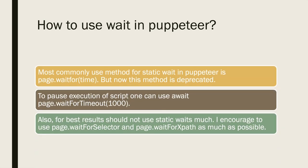How to use waits in Puppeteer: the most commonly used method for a static wait was page.waitForTimeout(), but this method is now deprecated — mentioning that shows the interviewer you use Puppeteer regularly. To pause script execution you can use await page.waitForTimeout() with a message like 'waited for one second'. For best results, avoid static waits and prefer page.waitForSelector() and page.waitForXPath(). There are also other wait functions: page.waitForRequest(), page.waitForResponse(), and page.waitForNavigation().